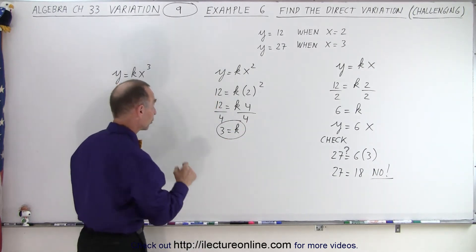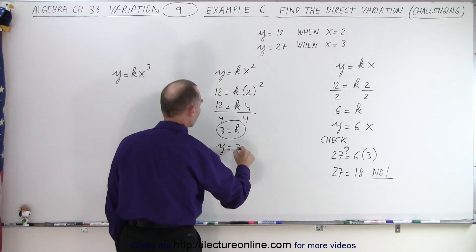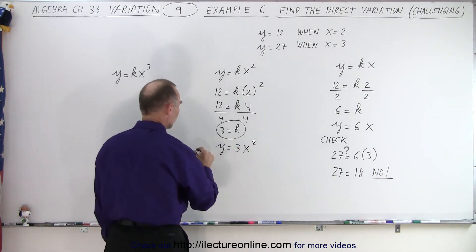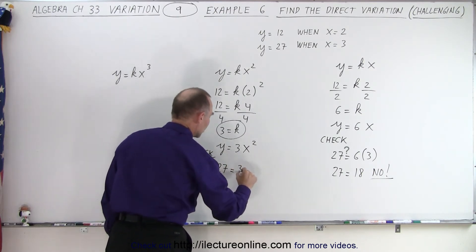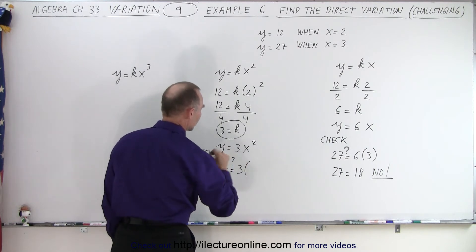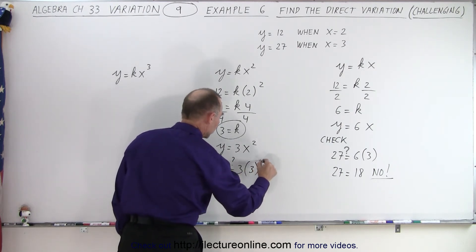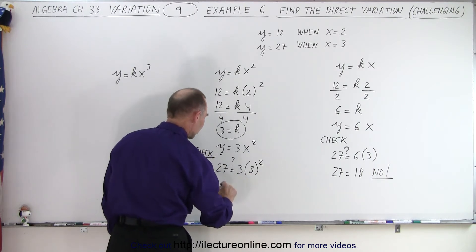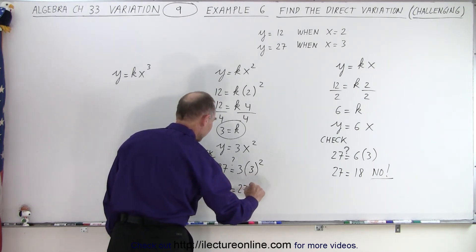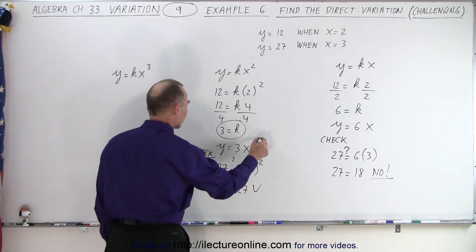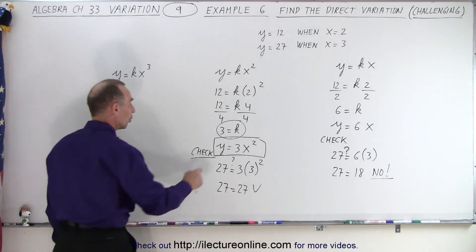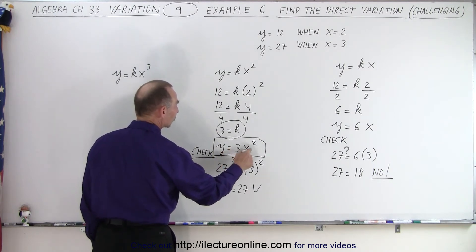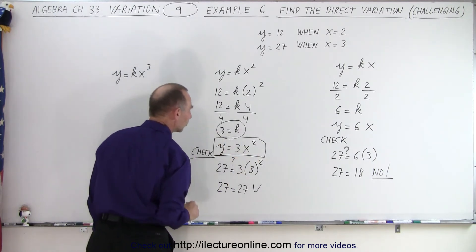Let's plug that into our general equation. So we have y equals 3 times x squared, and now we're going to do a check. We're going to plug in the two other values, 27 and 3, and see what we get. So 27 equals 3 times 3 squared, so we have 3 squared, which is 9, times 3, which is 27, so 27 is indeed 27, and so therefore this is the right equation. y equals 3x squared, and that would be the correct direct variation equation. y varies directly as x squared, and of course 3 is the constant k.